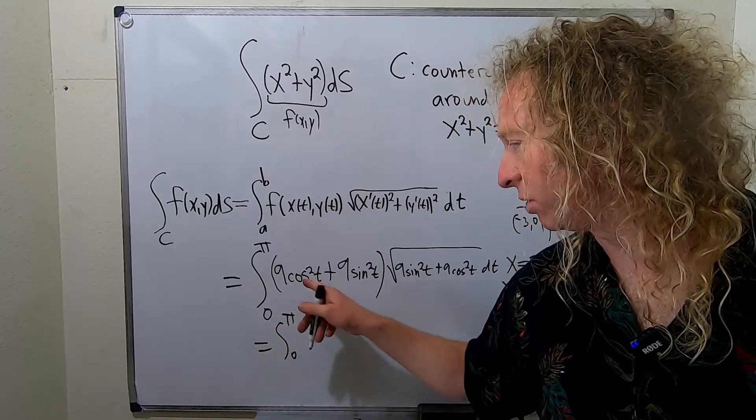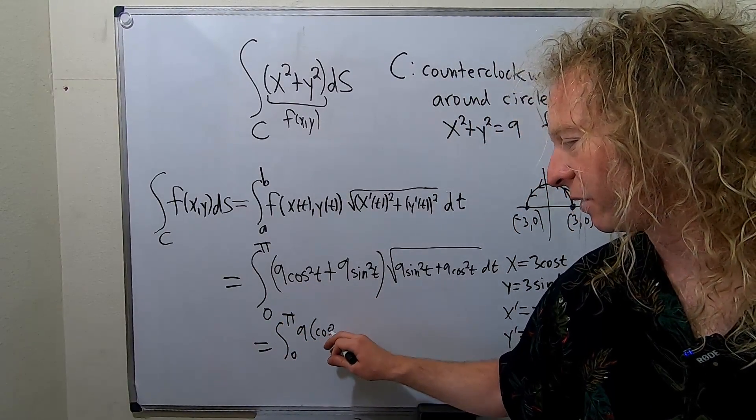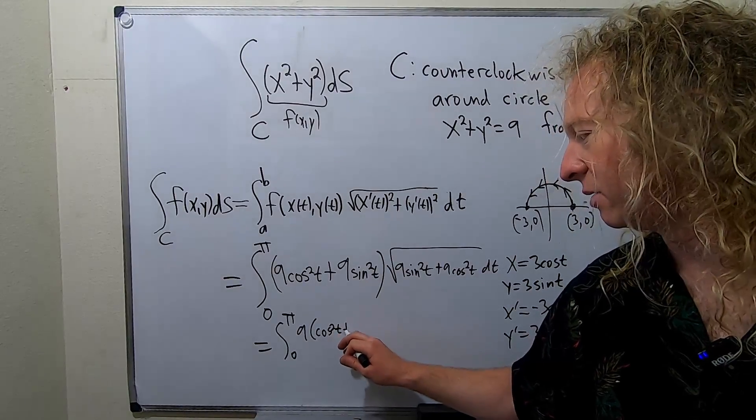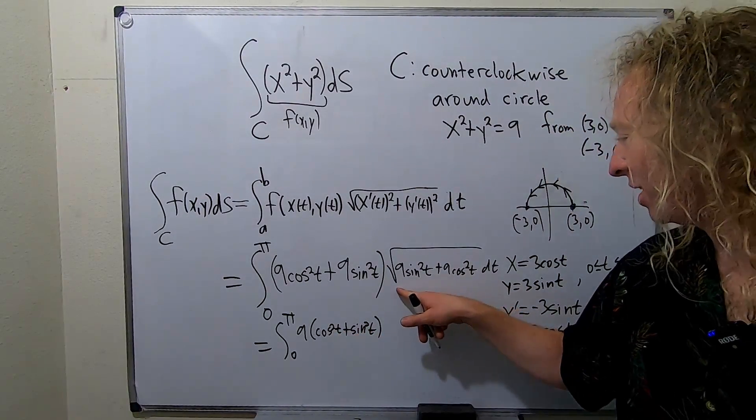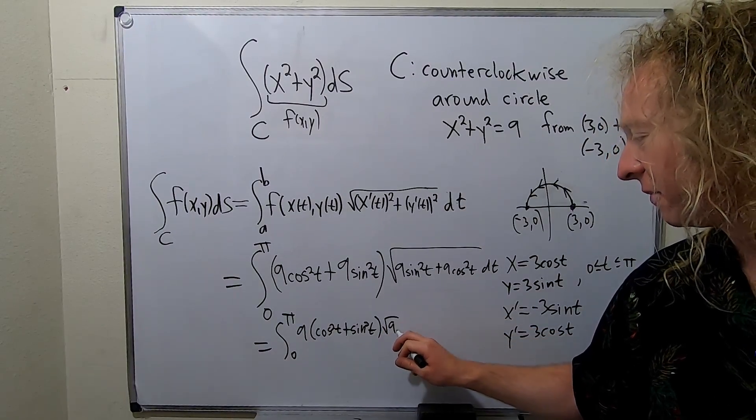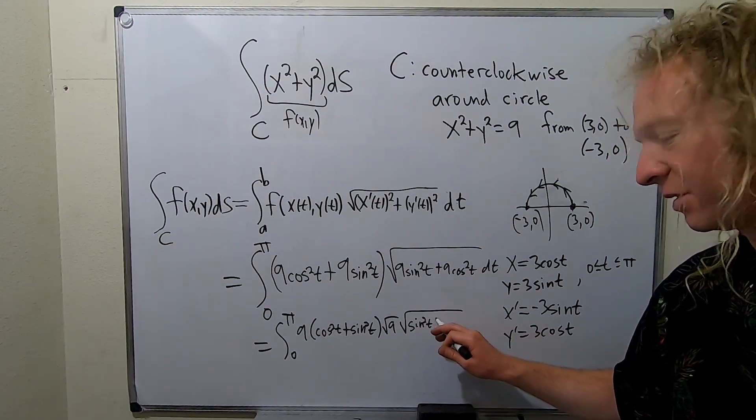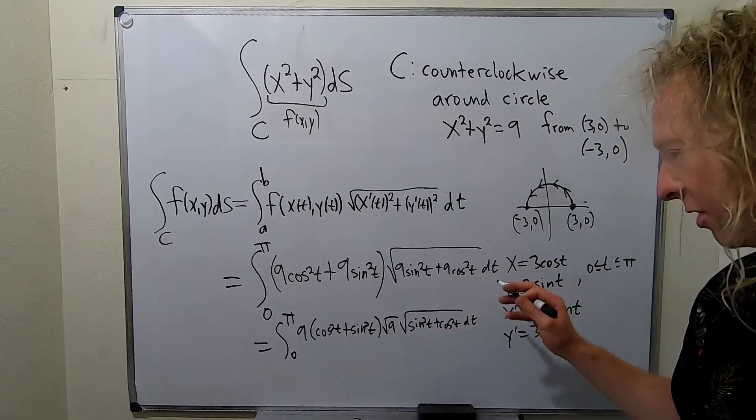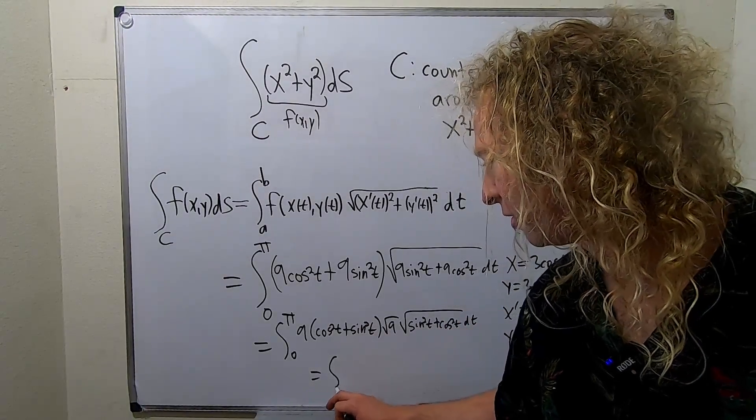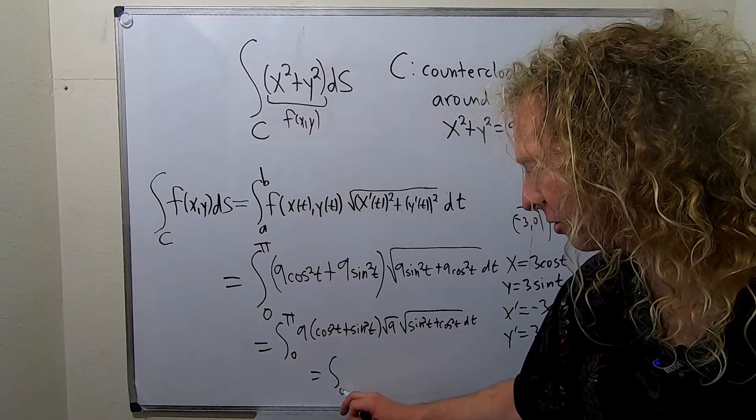So now what you can do is you can pull out a 9 here. So you get 9 cosine squared t plus sine squared t. It's the best part of the problem because it goes away. The same thing here. Pull out the 9. So you have square root of 9, square root, sine squared t plus cosine squared t. Eventually you can skip these steps because they're so clear. It's always better to show your work though. If you're doing this for like a class or something, show all the work. It's really key. This is 0 to pi.